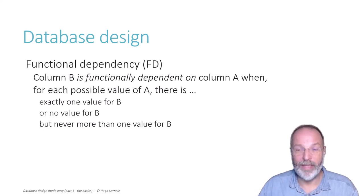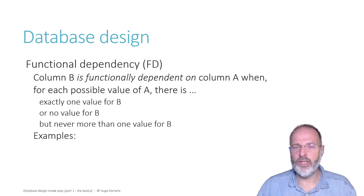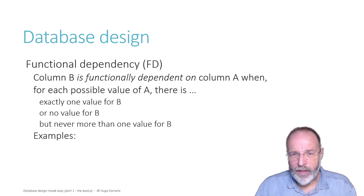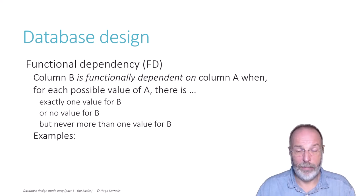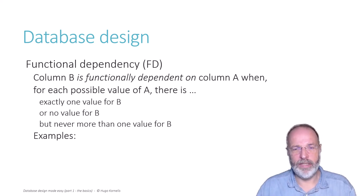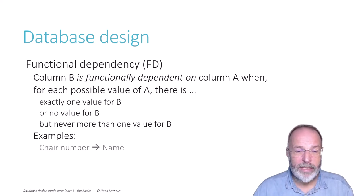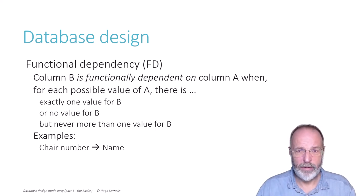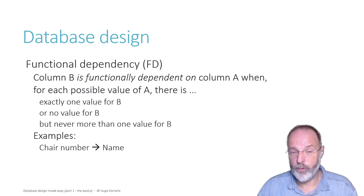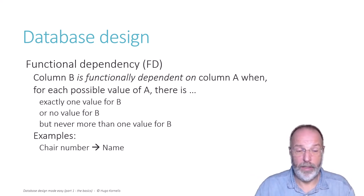Never more than one — zero values is okay, one value is okay, two or more: no. If that can happen, it's not a functional dependency. Let's give an example: I'm creating a data model for a conference. They want to capture a given point in time where all attendees are seated. I can say that the chair number determines the name, because given a chair number I can find the attendee in that chair — and there will be at most one.